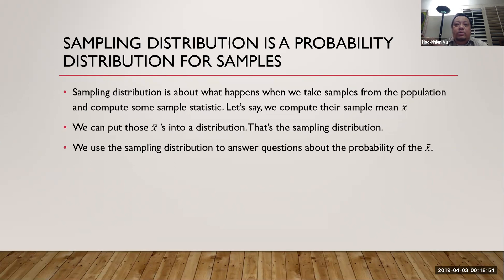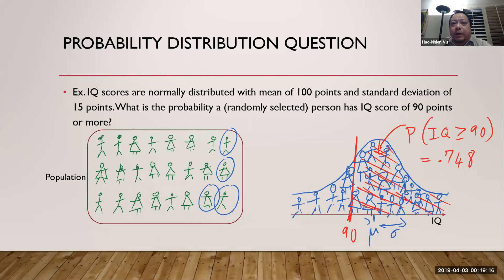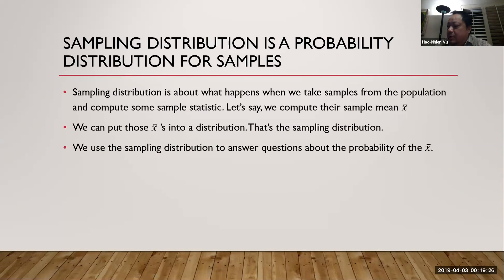In this case, let's say we compute the sample mean, which is x-bar. We take a sample, get an x-bar, and put that in the distribution. We take another sample, get another x-bar, and put that in. Just like before with individual IQ scores, except now for sampling distribution we're taking a sample mean — an x-bar — and placing that in the distribution.